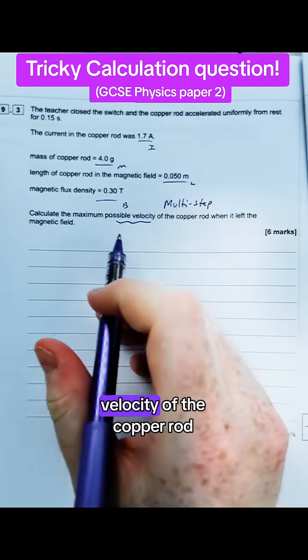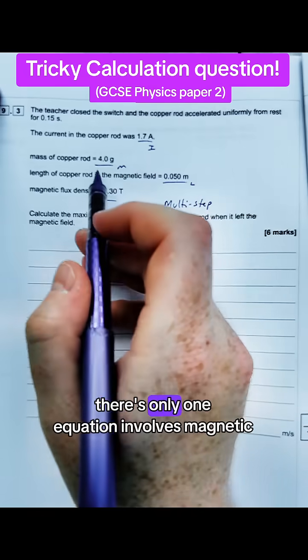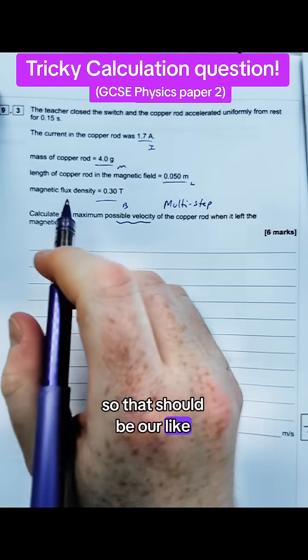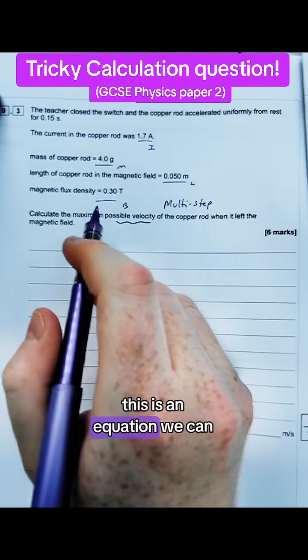And we're trying to work out velocity of the copper rod. There's only one equation that involves magnetic flux density, so that should be our alarm bell thinking this is the equation we're going to need to use.